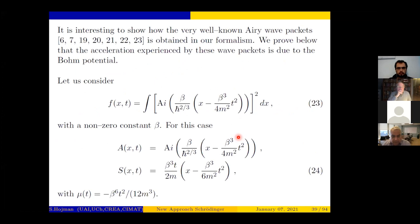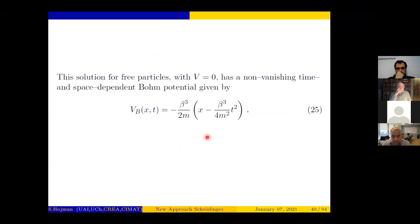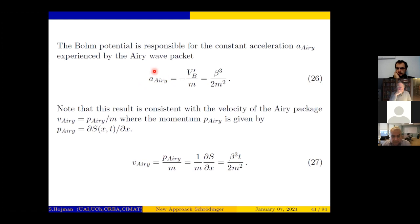This solution was found by Berry and Balazs in 1979, and as I just mentioned, the experiment confirming it was performed in 2007. There is another experiment with electrons—the first one with light. So for this special f given in equation 23, you get this A and S which correspond to the solution given by Balazs.